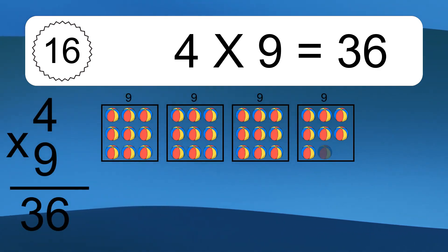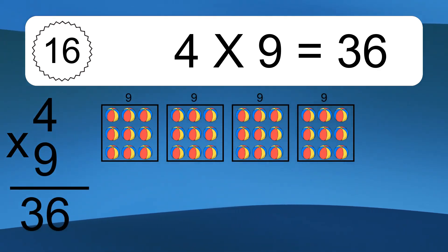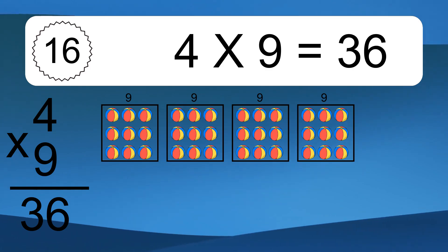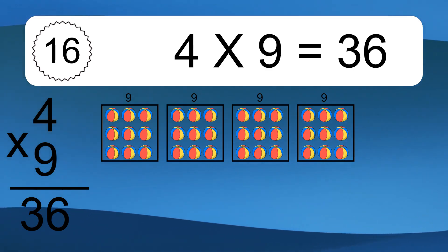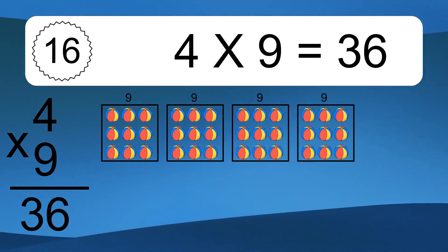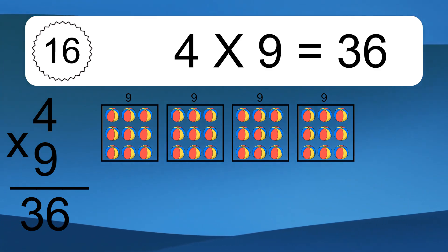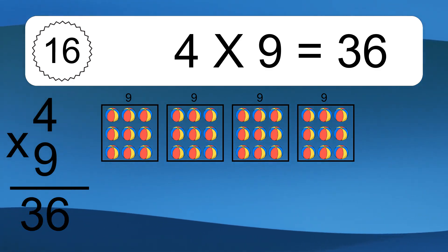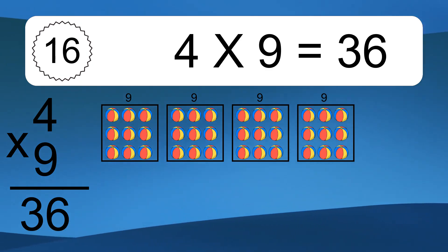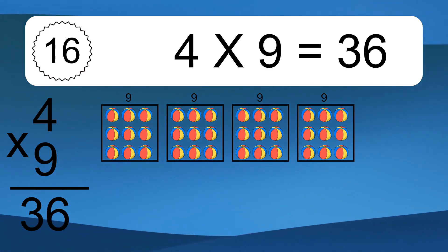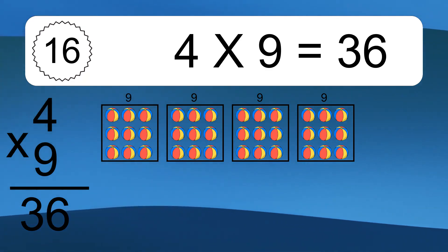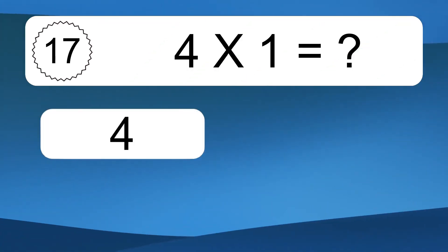4 times 9 equals what? 4 times 9 equals 36. We have 4 boxes, and each box has 9 colorful balls inside. If you count all the balls in all the boxes together, you will have 4 times 9 balls. This equals 36 balls.